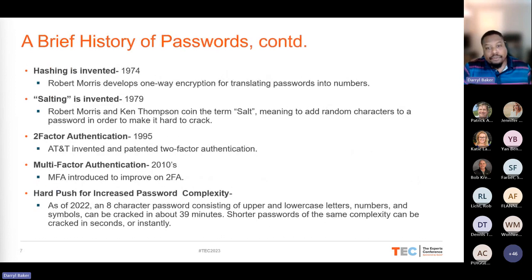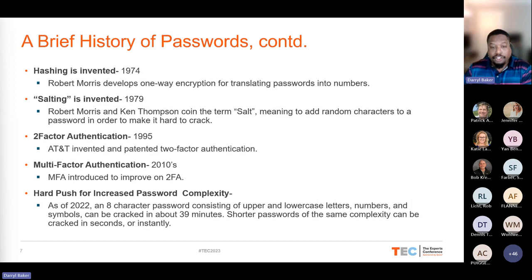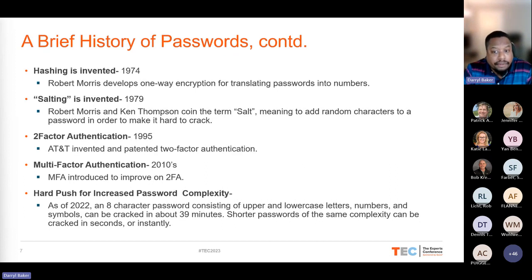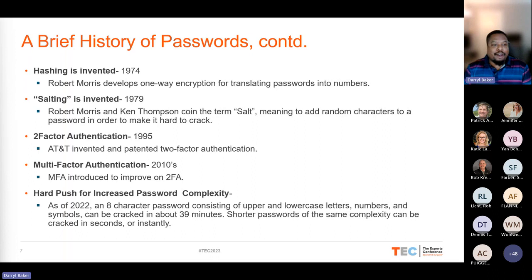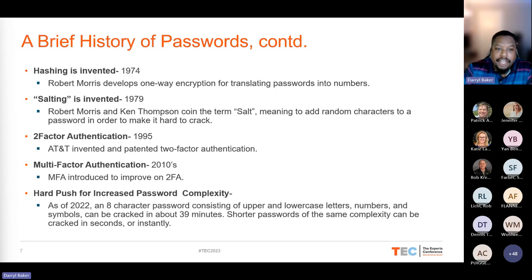In 1974 we move into hashing — a one-way algorithm. There's really no way to go backwards from it, though you can try to find a matching set of data, known as a collision, to figure out what it is. In 1979, Robert Morris and Ken Thompson created salting, which adds random characters to a password before it's hashed to make it even harder to crack. Interestingly, Robert Morris has a famous quote: 'The three golden rules to ensure computer security are: do not own a computer, do not power it on, and do not use it.'